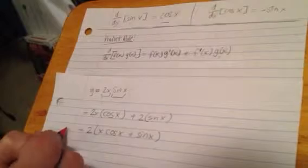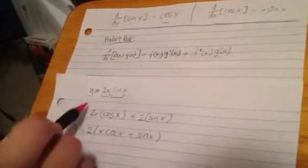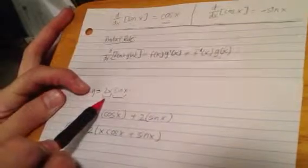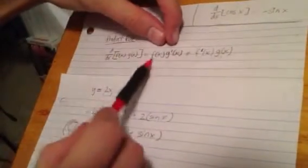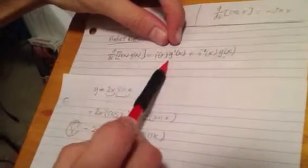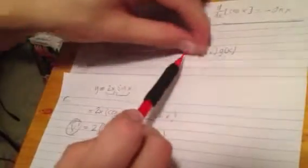And then this right here is your derivative, denoted by y prime. So again, f of x, g of x, using the product rule right here: f times g prime, f prime times g, and you add those two together, leaving you with this.